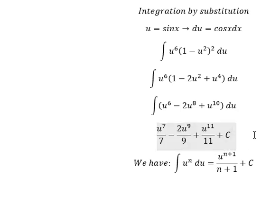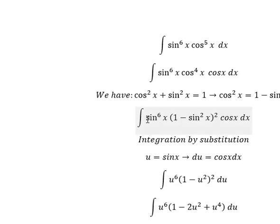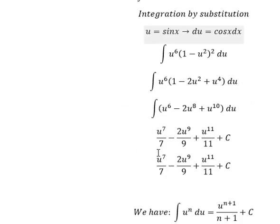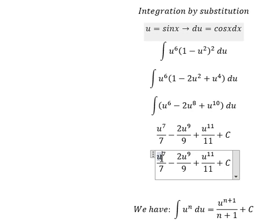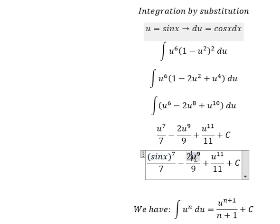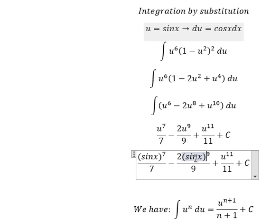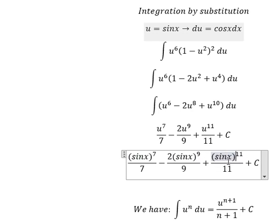u is sin x, so we have (sin x)^7/7 - 2(sin x)^9/9 + (sin x)^11/11 + C. This is the end. Thank you for watching.